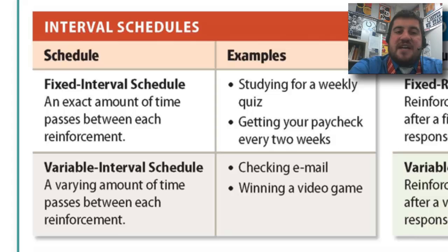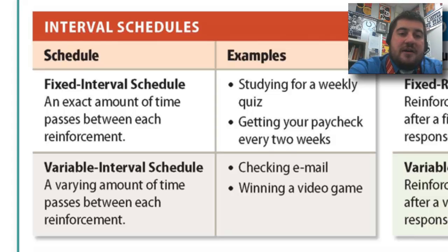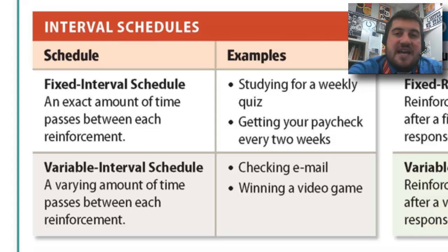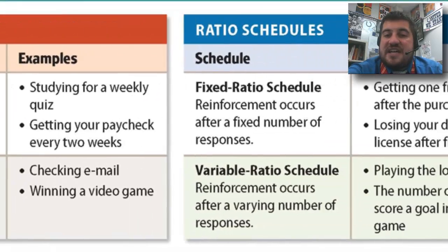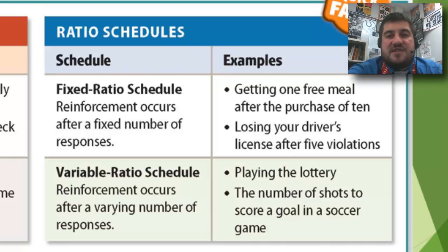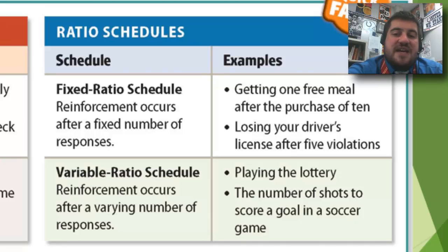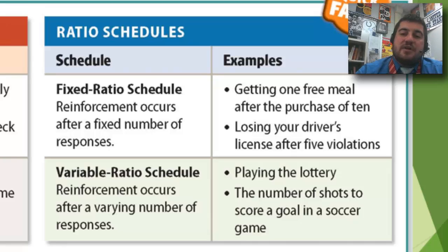Here are real-world examples. Fixed interval: studying for a weekly quiz, getting your paycheck every two weeks. Variable interval: checking email or text messages — you can check 50 times but won't be rewarded until the next message arrives. Fixed ratio: getting one free meal after purchasing ten, or losing your driver's license every five violations. Variable ratio: Las Vegas slot machines or playing the lottery — you pull the lever many times but get rewarded on a varying ratio. Also, the number of shots to score a goal in soccer.